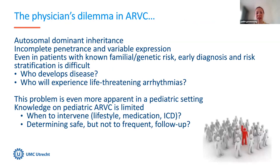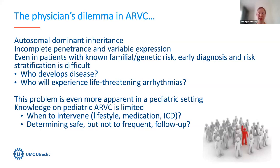We face a clinical dilemma in ARVC since exact risk assessment for the individual patient remains a challenge. The disease has an autosomal dominant inheritance pattern, and diagnosis is hampered by incomplete penetrance and variable expression. Even in patients with known familial or genetic risk, early diagnosis and risk stratification can be very difficult. This problem is even more apparent in pediatric ARVC, where knowledge is limited.